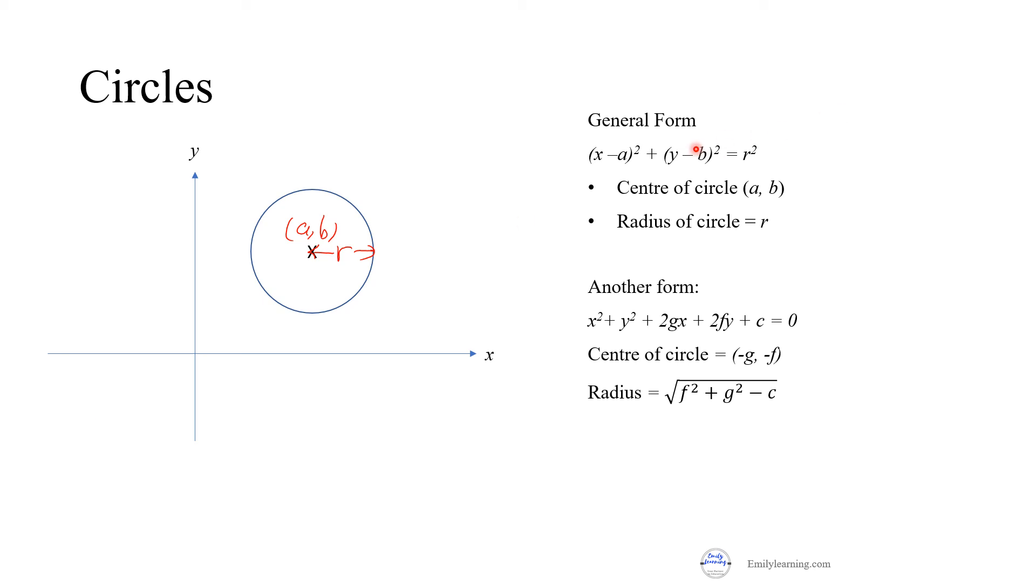If you have it in this form, you can simply get a and b, which is the center of the circle, and r is the radius of the circle. From this equation here, if it is in this form, then you need to do a few modifications or calculations based on this general form to find the center of the circle and the radius. Sometimes the question gives you the center of the circle and the radius. Based on that, you can find the equation of the curve by subbing r as well as a comma b into the equation, or subbing the center of the circle which is minus g comma minus f and the radius which is given by this form into this equation to find the equation of the circle.